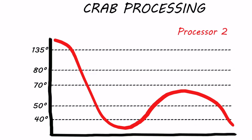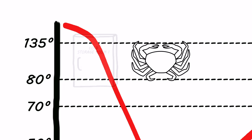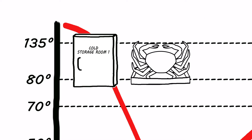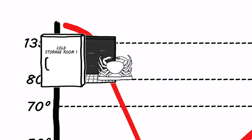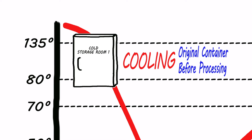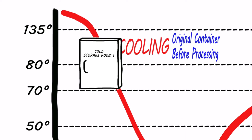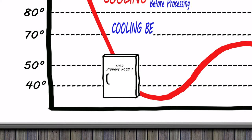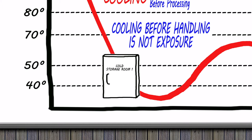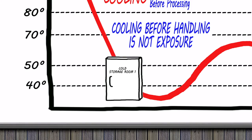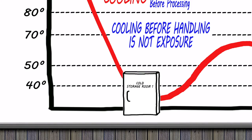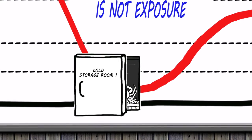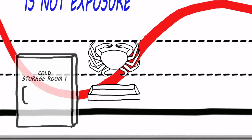In the second graph, the processor places the crab directly into the cooler in its original container and allows it to cool below 50 degrees before processing begins. Since the crabs are not handled before cooling, the cooling time isn't considered part of the cumulative time and temperature exposure, even though the temperatures are above 50 degrees. When the temperatures are below 40 degrees, the crab is removed from the cooler for backing, picking, and packing.